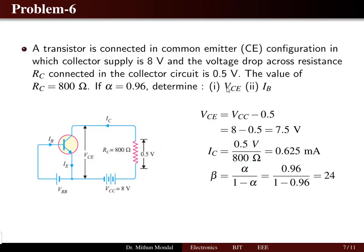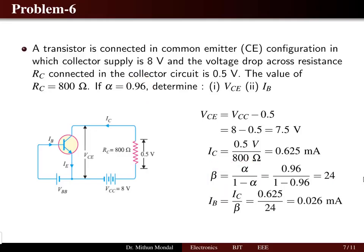Using the relationship between beta and alpha — beta equals alpha divided by (1 minus alpha) — with alpha of 0.96, we get beta equal to 24. Once beta is obtained, the base current equals collector current divided by beta, which is 0.02604 milliamps (approximately 26 microamps).